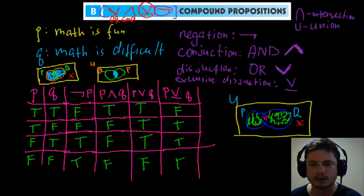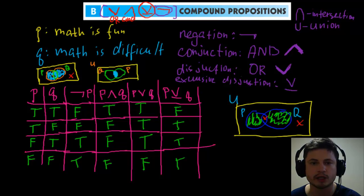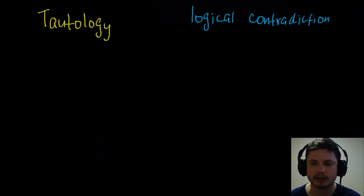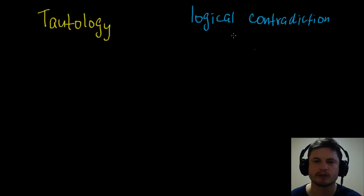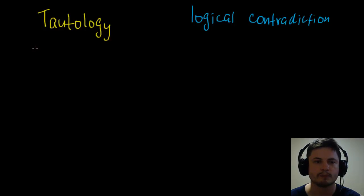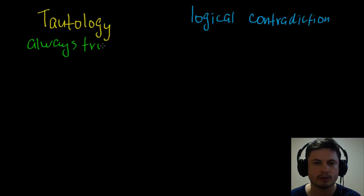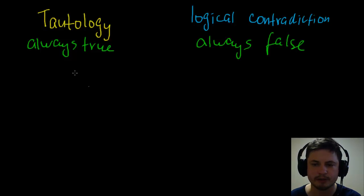That covers truth tables and compound propositions, but there are two more words to understand before we finish: tautology and logical contradiction. Tautology is a word you may not have heard before, but contradiction you probably know. A tautology is a compound proposition whose values are always true — all rows in the truth table are true.